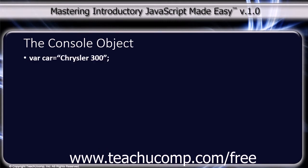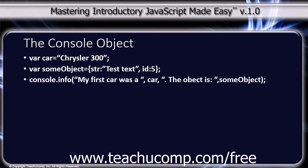The example code sets up a variable: var car equals "Chrysler 300"; and var someObject equals { str: "test text", id: 5 }. Then calls console.info with the string "my first car was a ", followed by the car variable, then ". The object is: ", followed by the someObject variable.